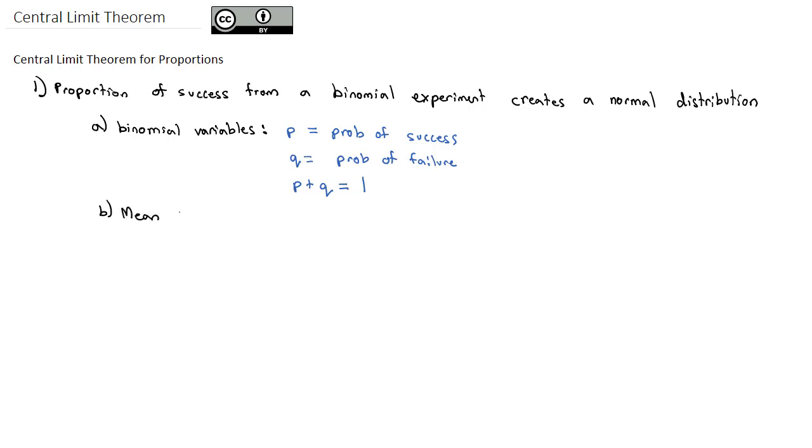Now it turns out that the mean of this normal distribution that is created from the proportion of successes from the binomial experiment is exactly P, the probability of success of any one result. And then we can calculate the standard error of the normal distribution: the square root of P times Q divided by N, where N is the sample size.